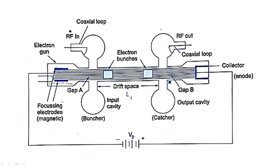The drift space is the space where the electron changes its velocity so that velocity modulation occurs. We are focusing on the calculation of L1 because velocity modulation occurs only between the buncher cavity and catcher cavity. This is the space provided for the electron to change its velocity, so we concentrate on the calculation of drift space L1.